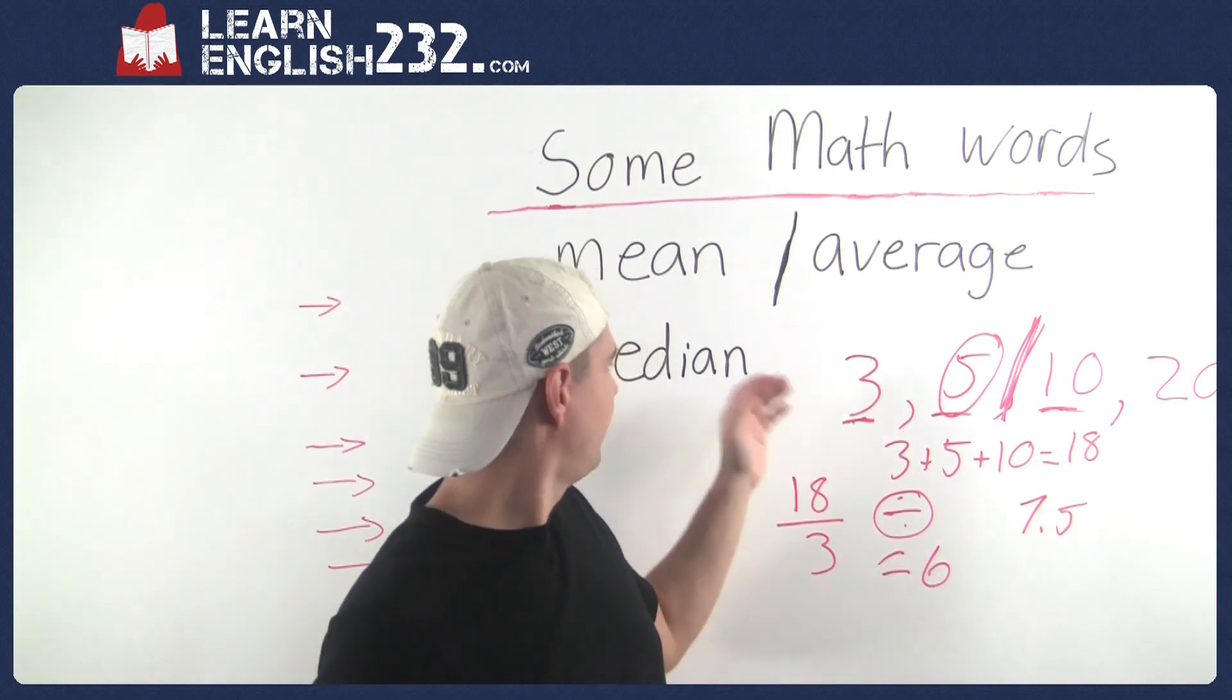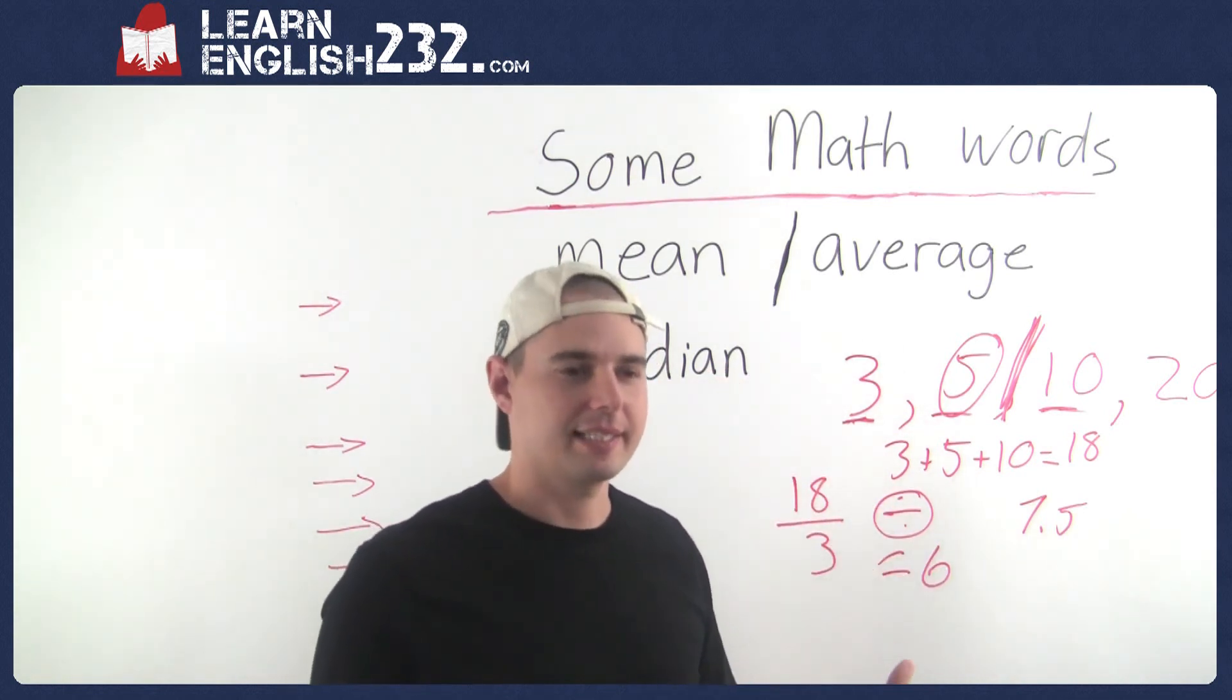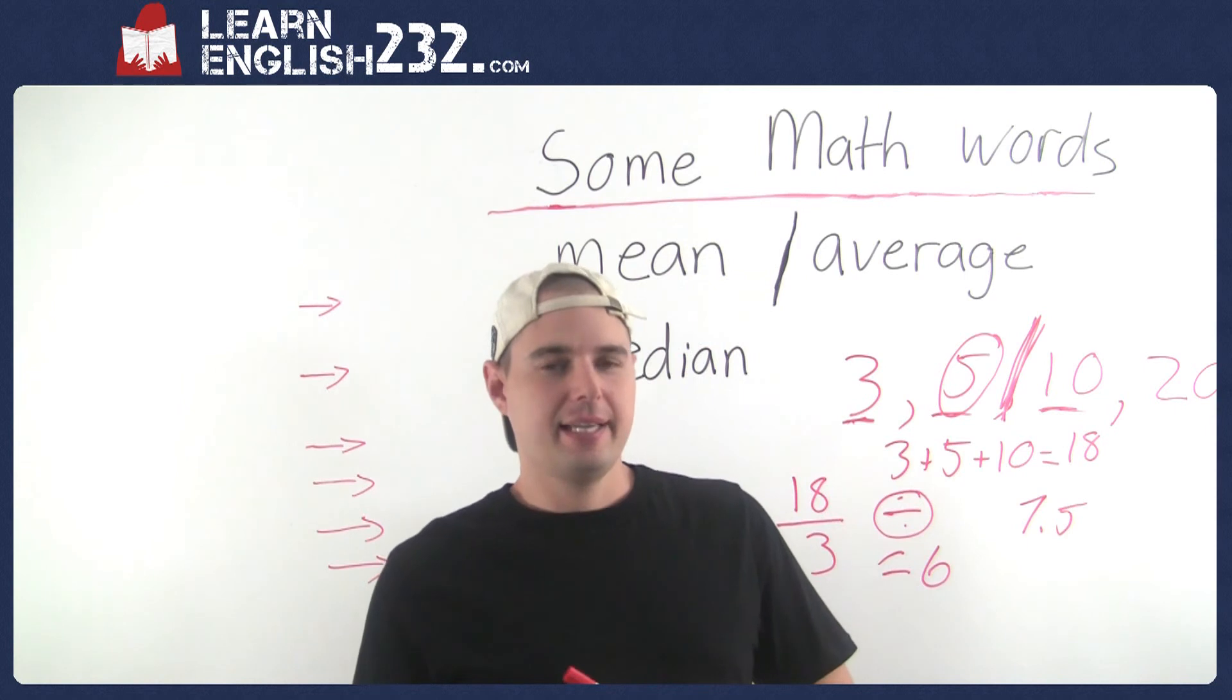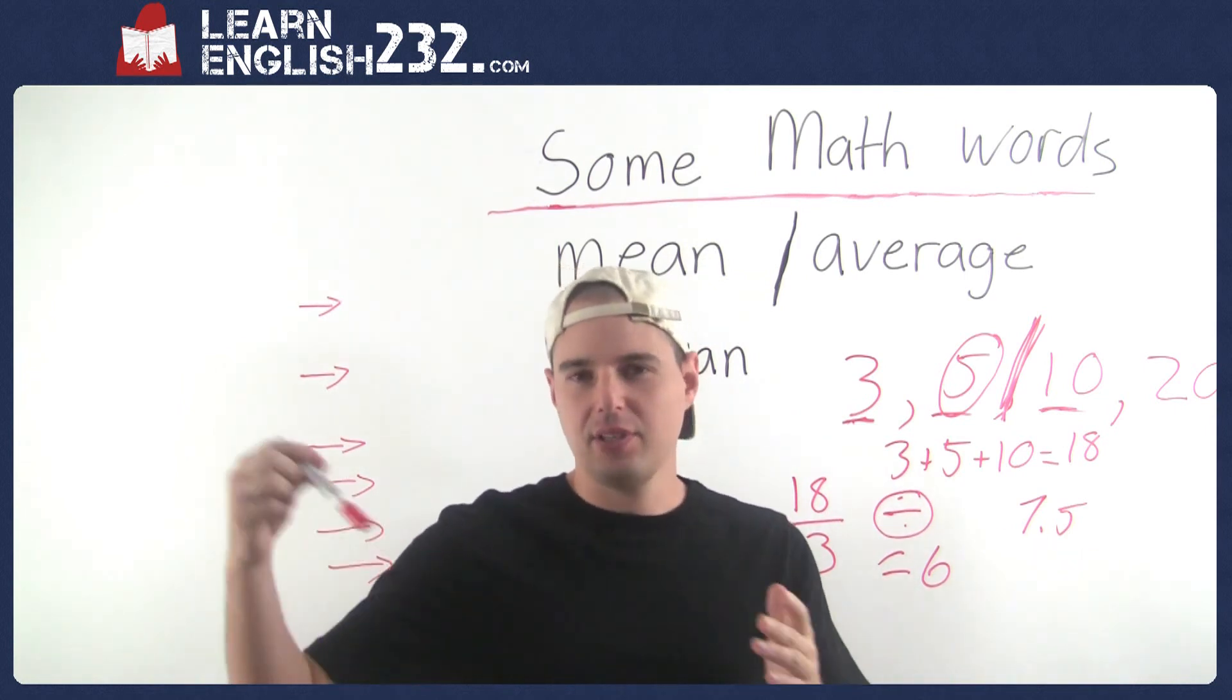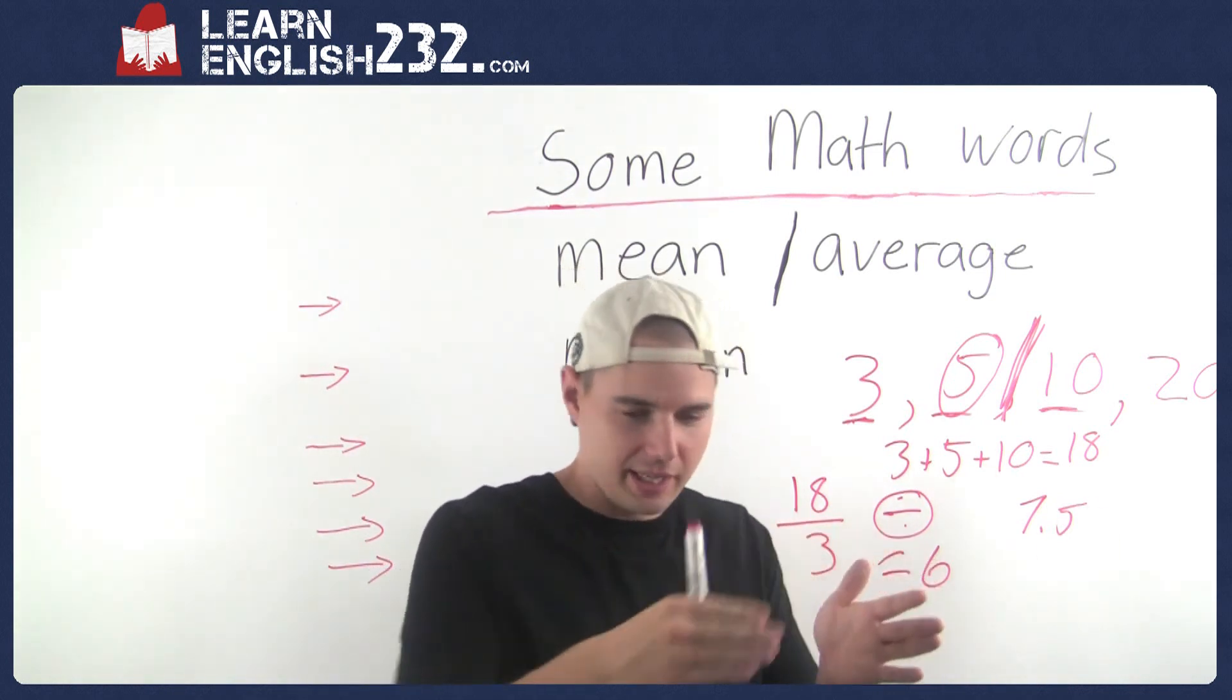And median is the middle number. So if you're talking about median salary, that's a way we use it all the time. You could see that in the newspaper or whatever. It's just saying if there's like 500 workers and the CEO makes the most and the person sweeping the floor makes the least, you line up all the salaries, take the one in the middle, that's the median salary.